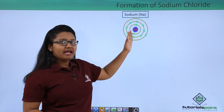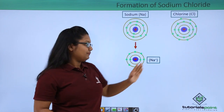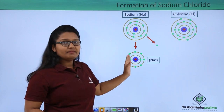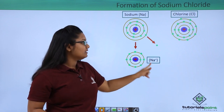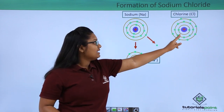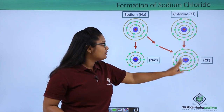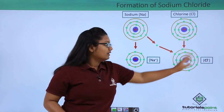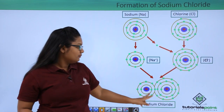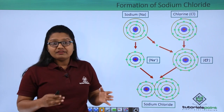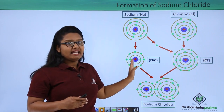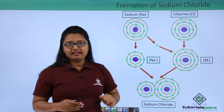The sodium atom lost one electron to form a sodium ion, and this chlorine atom captured that electron to form the chloride ion. These two ions stick together to form a molecule of sodium chloride.